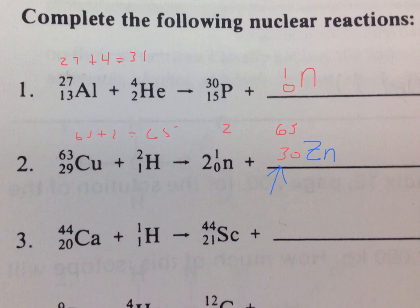Let's look at problem number 3. We have 44 plus 1, so we have 45 on this side. We have 44 plus 1. We have 20 plus 1 on the left. That's 21. We have 21 on the other side. Therefore, we'll have another neutron.